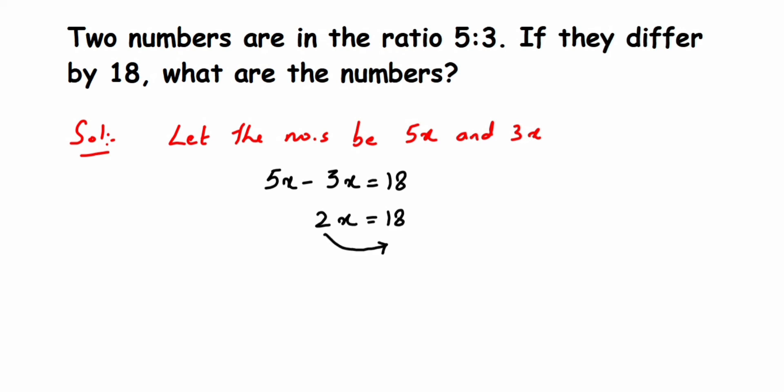So x = 18 divided by 2. You can either do the cancellation or just divide. I'm doing cancellation - two ones and two nines. We get x = 9.